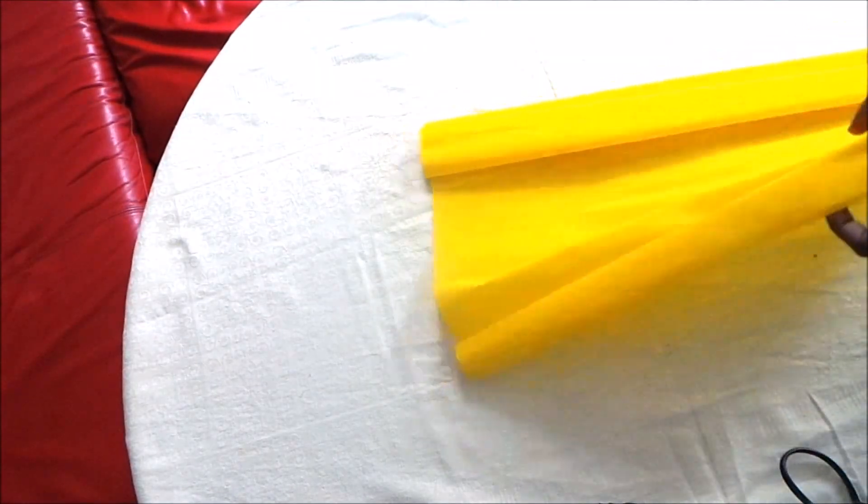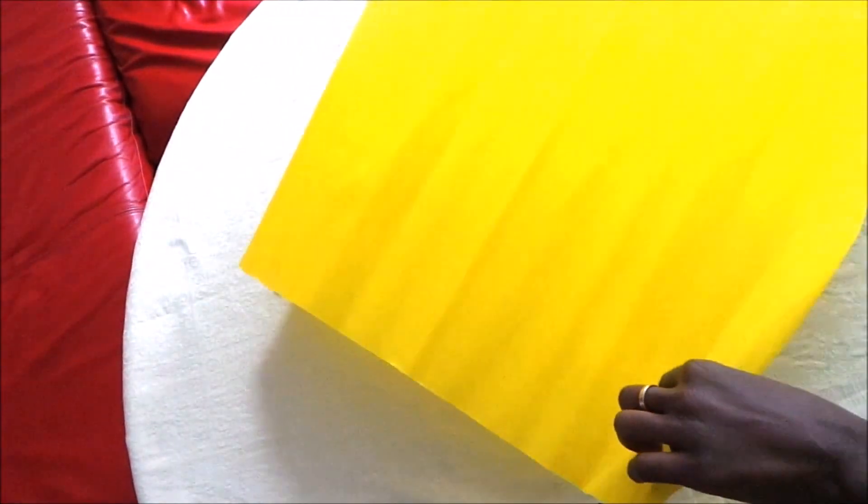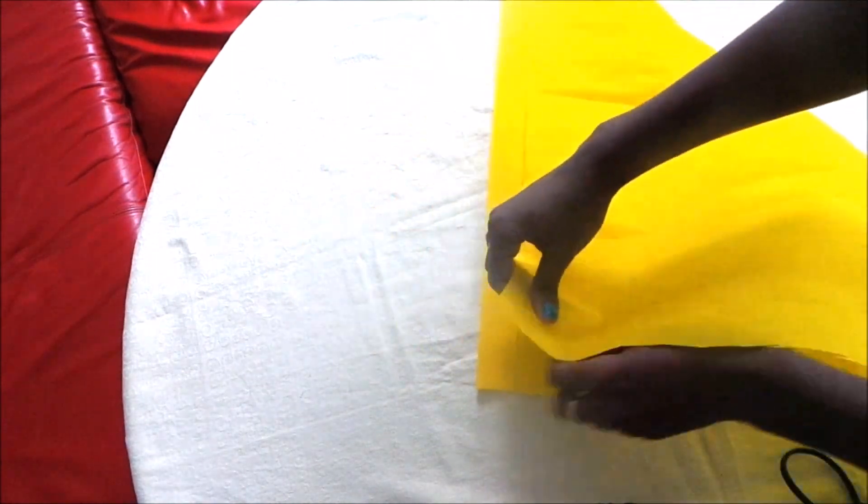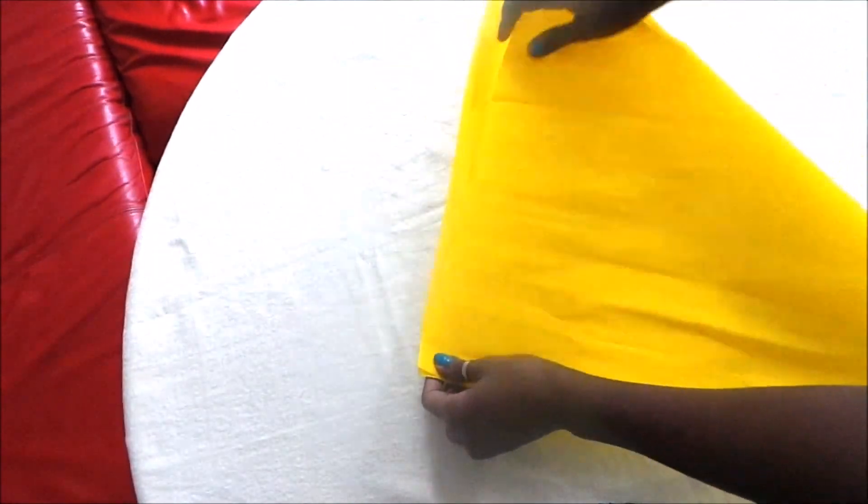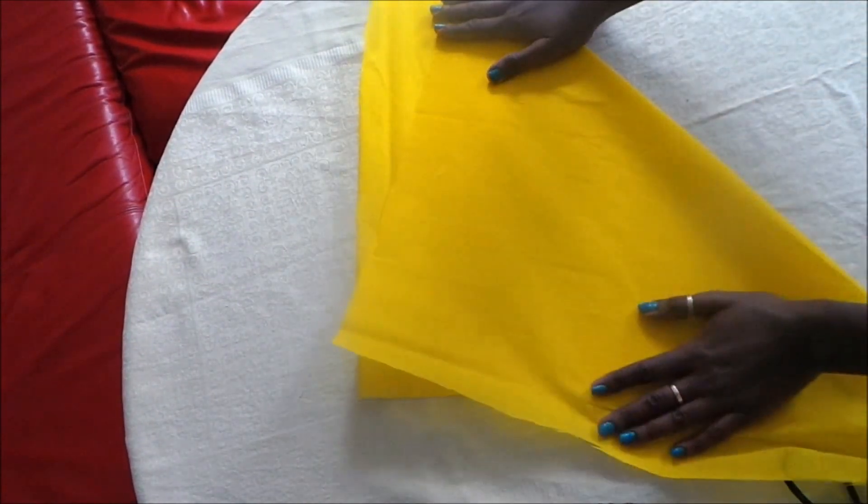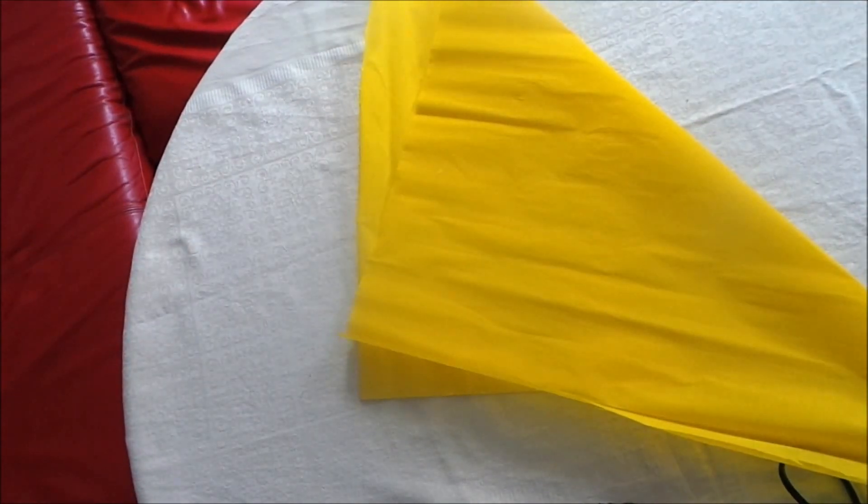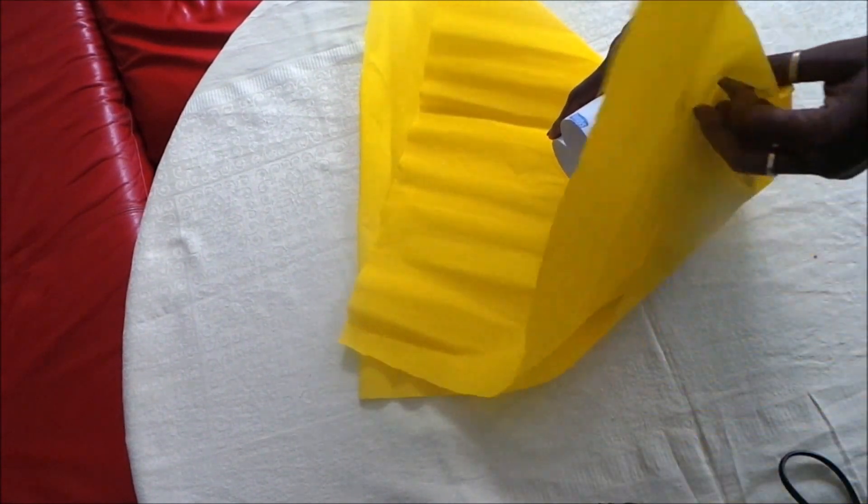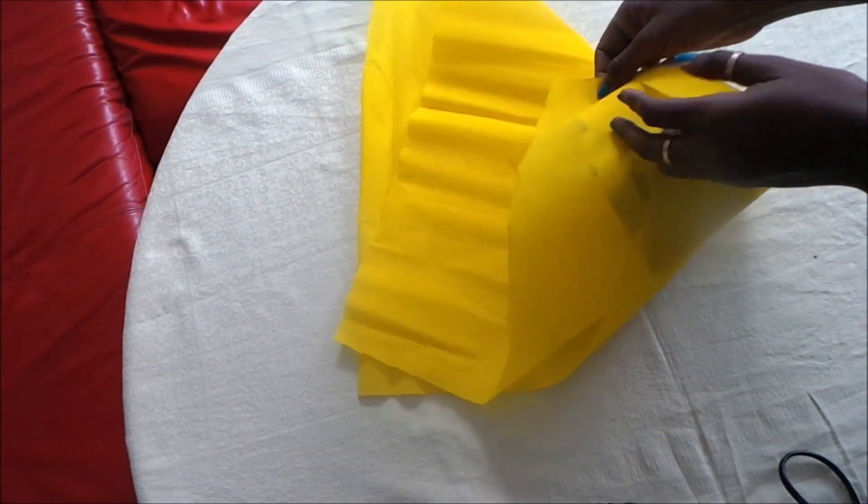After cutting, you fold it so one side comes to this side. Then you bring your toilet paper rolls and put them in the middle.